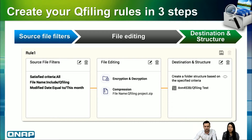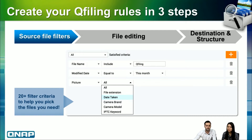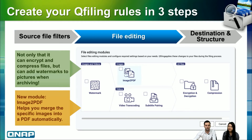In the source file filters, we provide more than 20 conditions. You can filter by file name, modify date, or file size. Advanced conditions include picture taken date and even the camera brand. For documents, you can pick up specific authors. In the file editing modules, we provide watermark — you can add it on your images and videos — and also a new module: Image to PDF, which can merge all images into one PDF for convenient sharing.